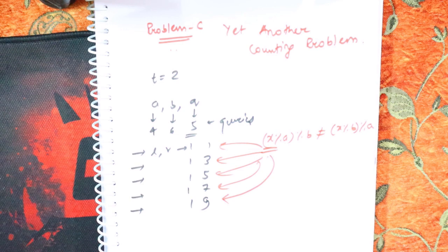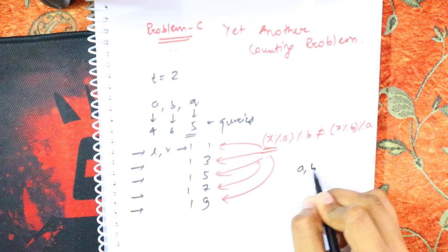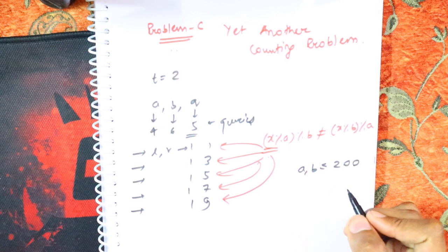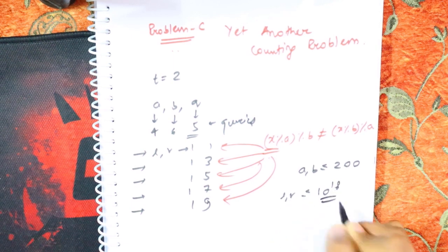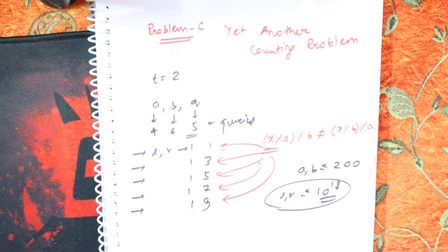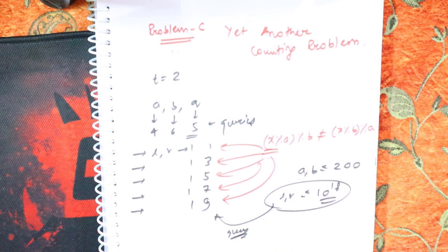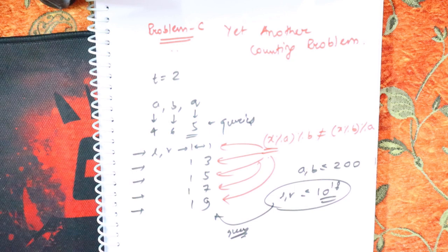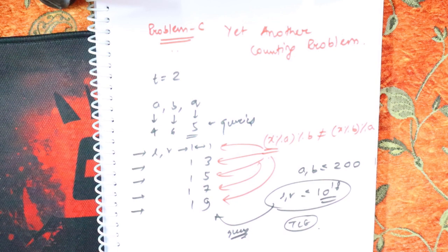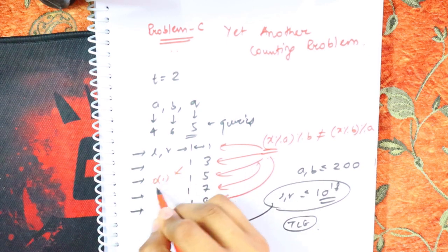The question is clear. How will you approach it? The first intuition is to look at the constraints. A and B are less than or equal to 200. But L and R are less than or equal to 10^18, so it's pretty large. For each query you cannot iterate over the entire range - it will get TLE. So you want to pre-compute some answer to find the result for each query in O(1).